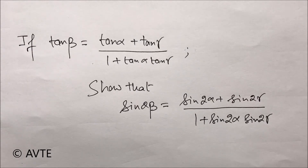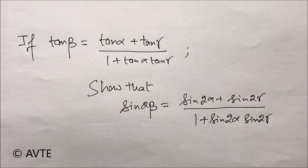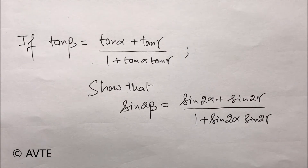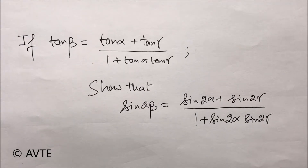This question clearly involves multiple angles because we are given β and need to find 2β. The most important thing is that instead of tan we need everything in sine. So what we can do is break tan into sin/cos, and hence get everything in terms of sine and multiple angles. We solve the right-hand side of the given condition.